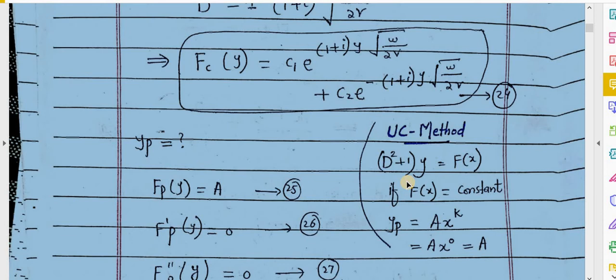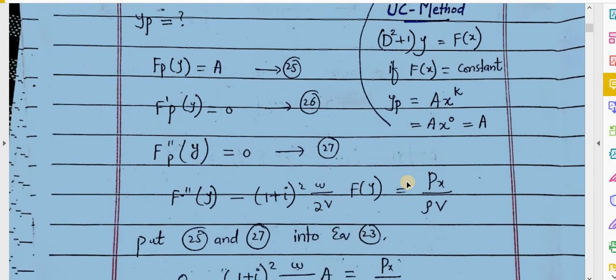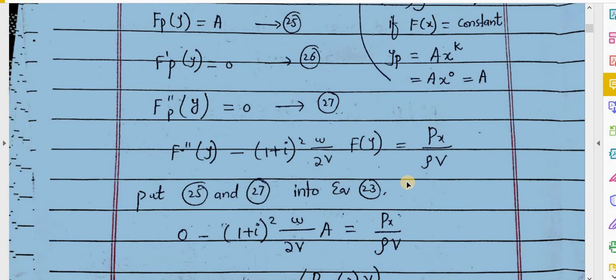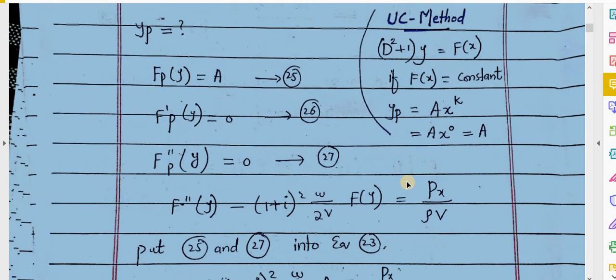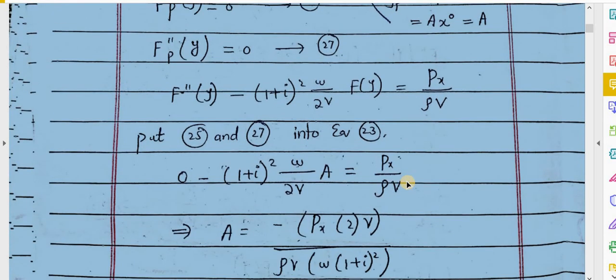We can also apply the UC method here, which is a simple method to solve this kind of equation. This method is described in the book Calculus with Analytical Geometry by S.M. Yusuf and Muhammad Amin. Using the UC method, equations 25, 26, and 27 are obtained by taking derivatives of these functions.